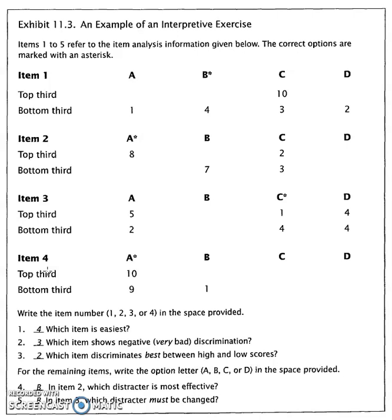Now, in order to do an item analysis, we take all the exams and we sort them from the highest score to the lowest score, and the top third, and in this case that equals 10, the top third are the students who have more content knowledge, right? These are our students who got A's, and then we skip the middle students, and we go to the bottom third.